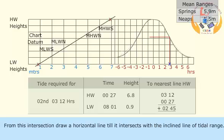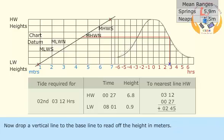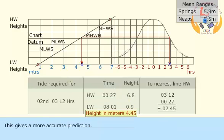From this intersection, draw a horizontal line till it intersects with the inclined line of tidal range. Now drop a vertical line to the baseline and read off the height in meters. This gives a more accurate prediction.